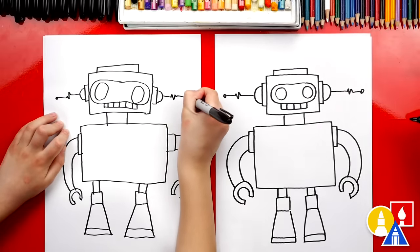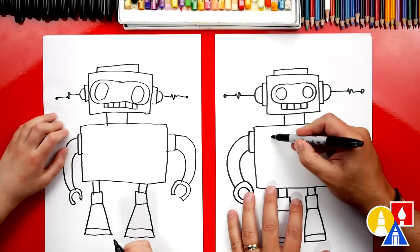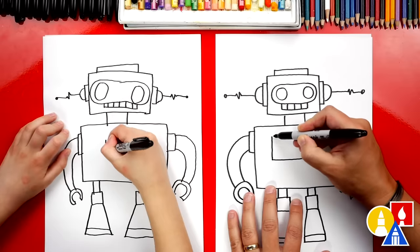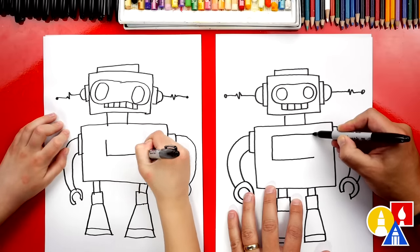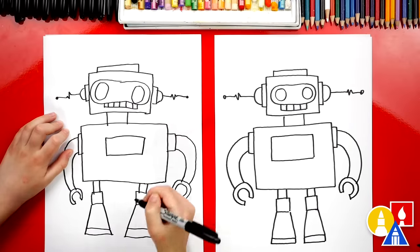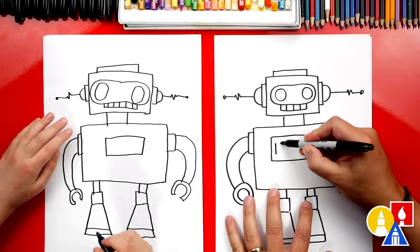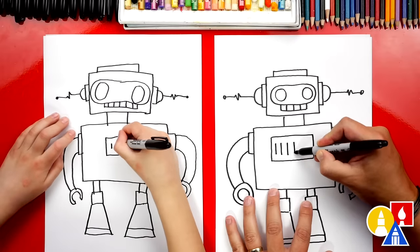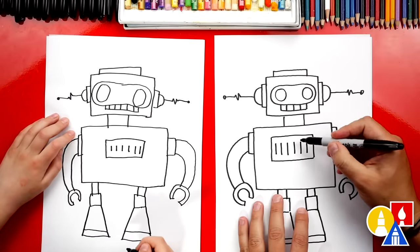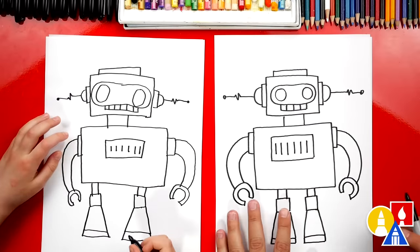Let's add a little screen on his chest. We're going to draw another rectangle shape right here. I'm going to draw upside down L to connect. And then we can add little dash lines inside. Maybe this is the battery. It tells you how much battery is left on your robot.